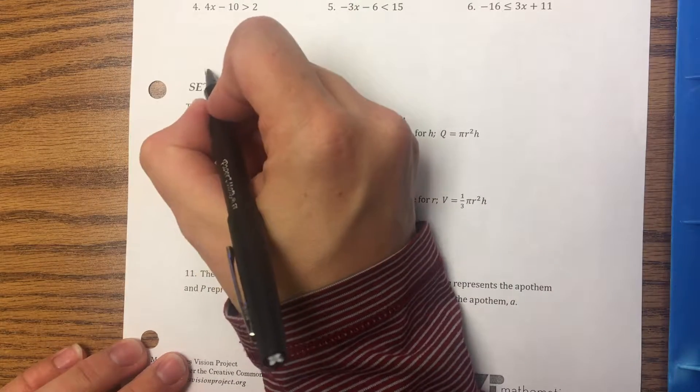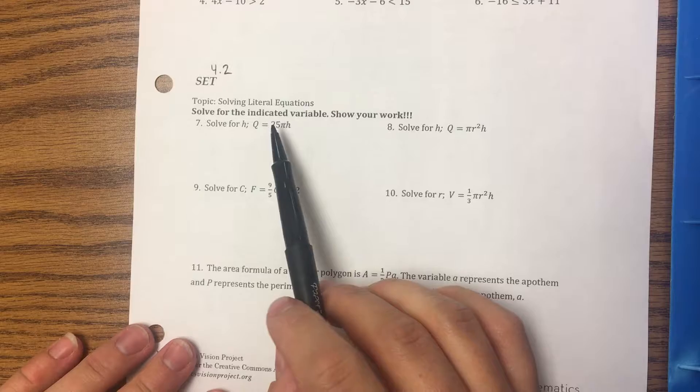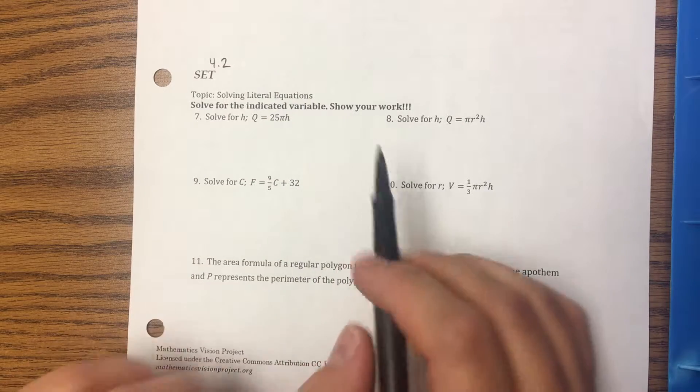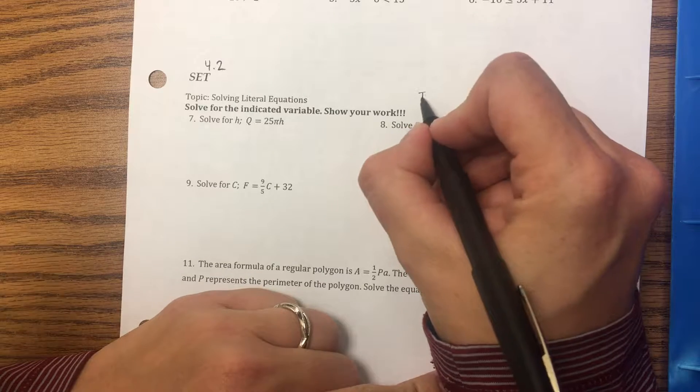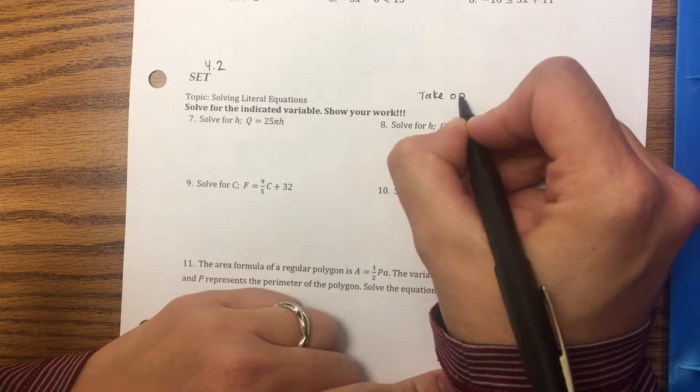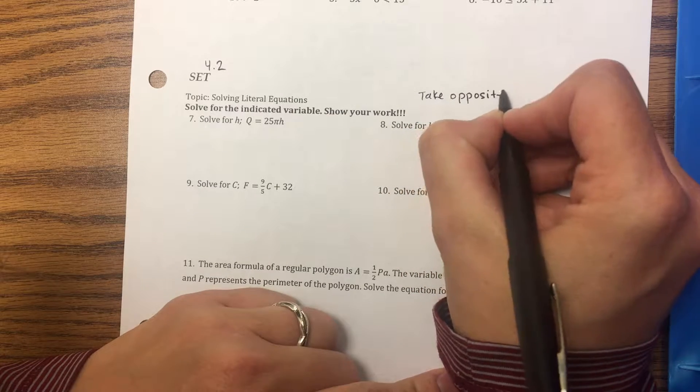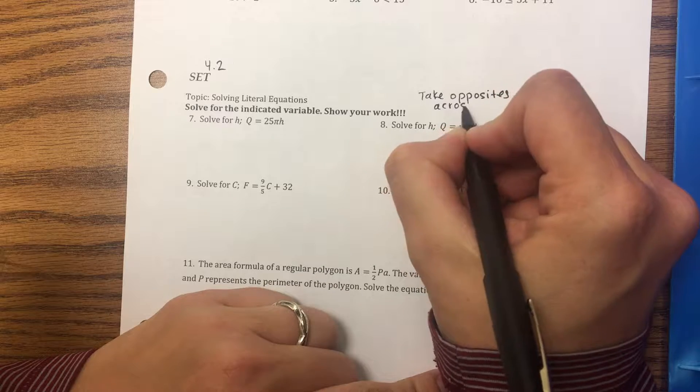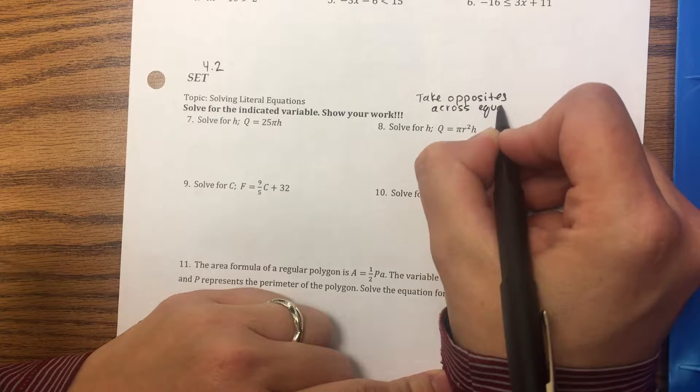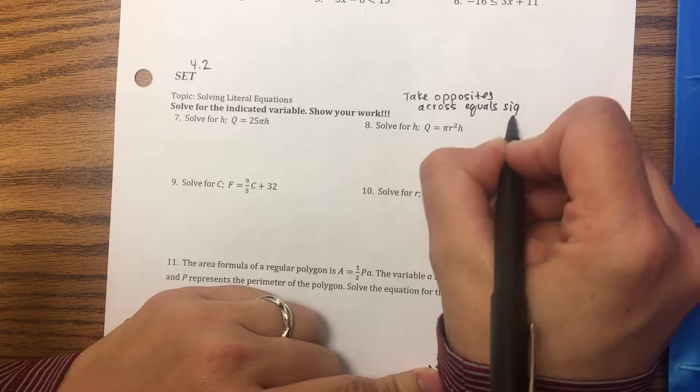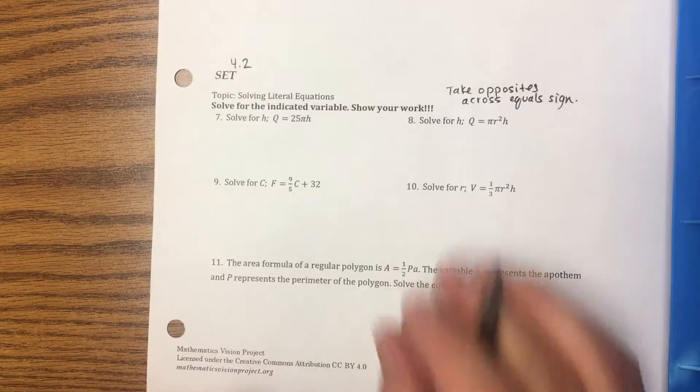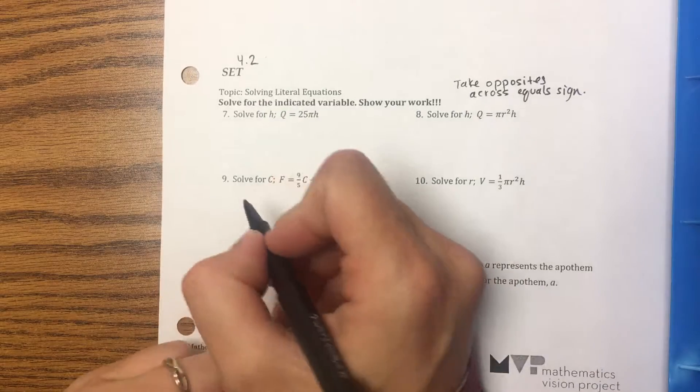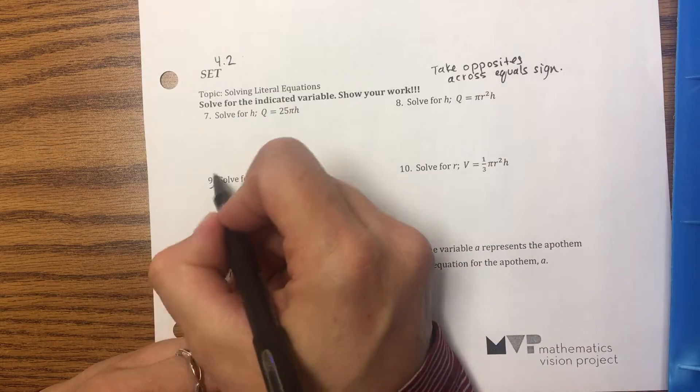For the 4.2 set, you want to solve for the indicated variable. Remember, you solve these like regular equations. You take opposites across the equal sign and then isolate the variable you want. I'll do one with a fraction.